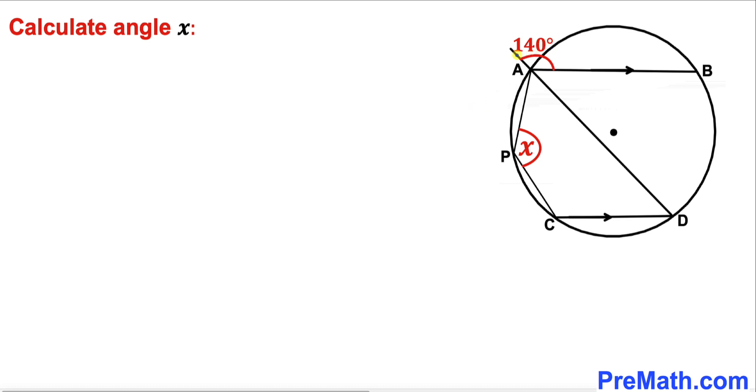We know this straight angle from here to here is 180 degrees. Therefore, this angle has got to be 180 minus 140, that is going to be 40 degrees.